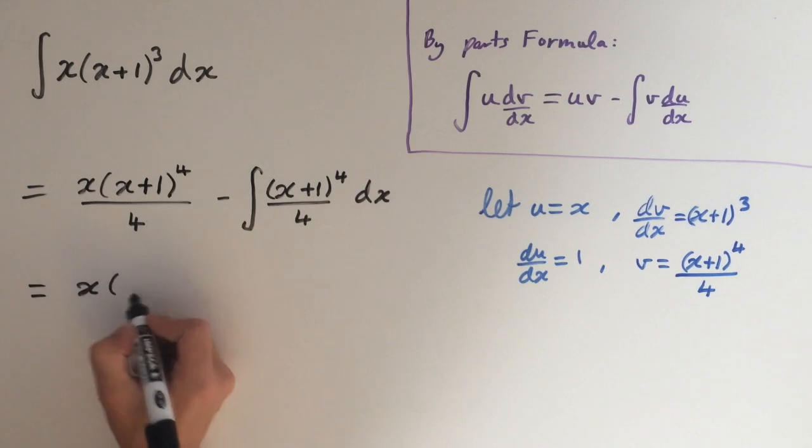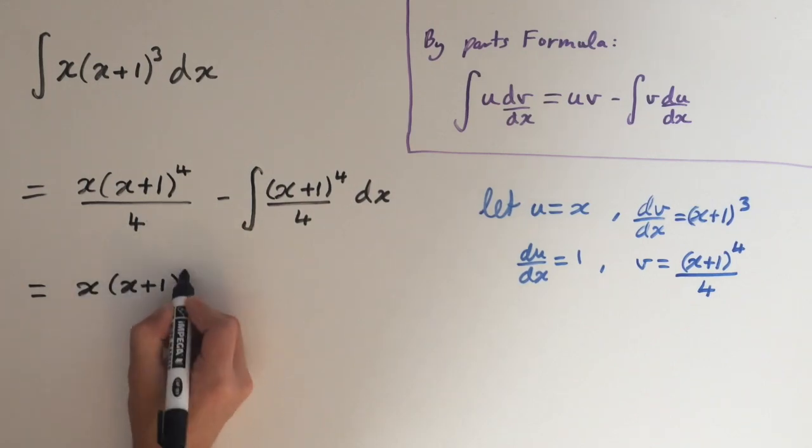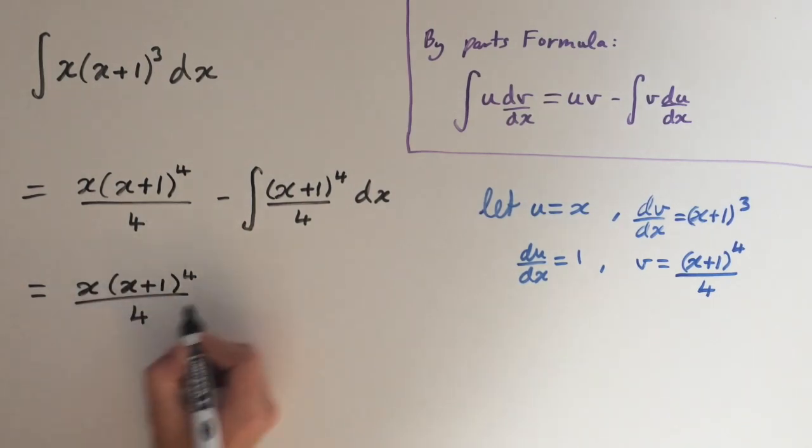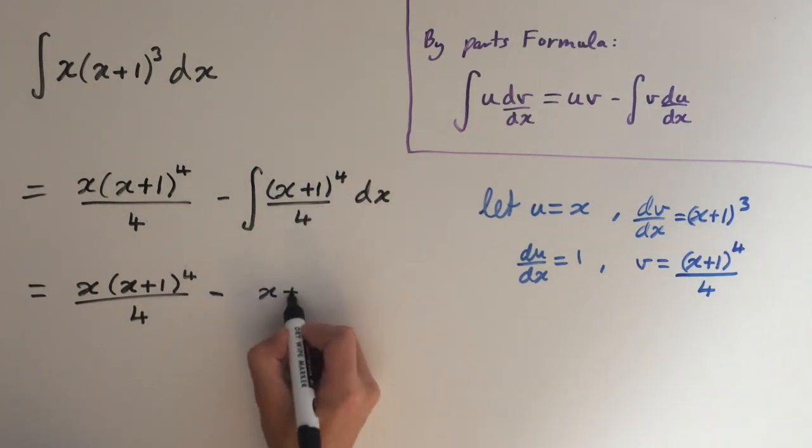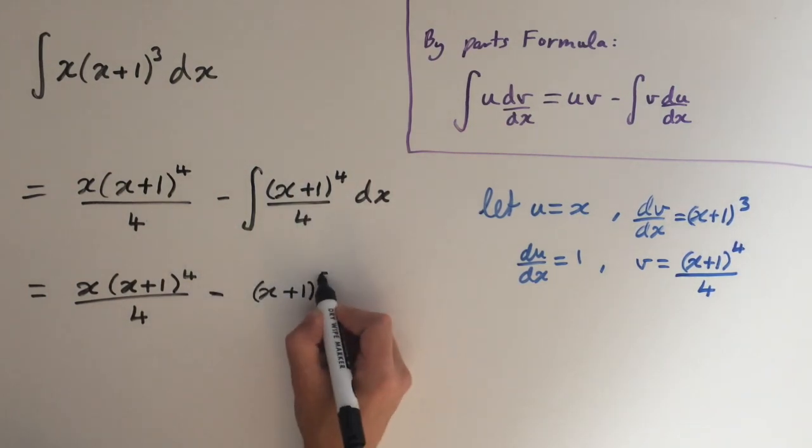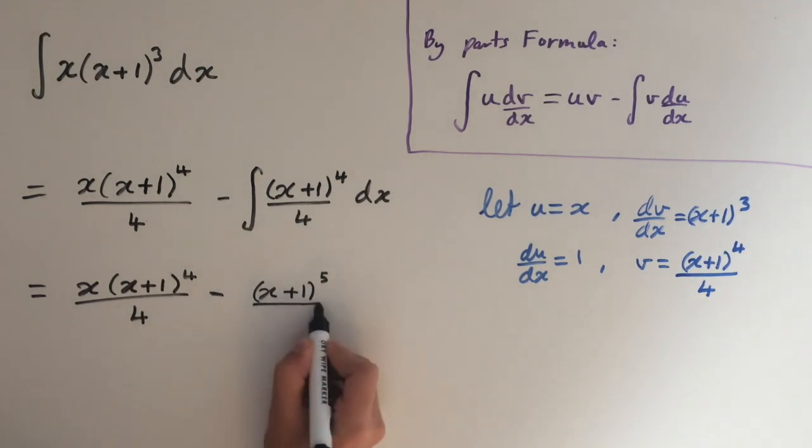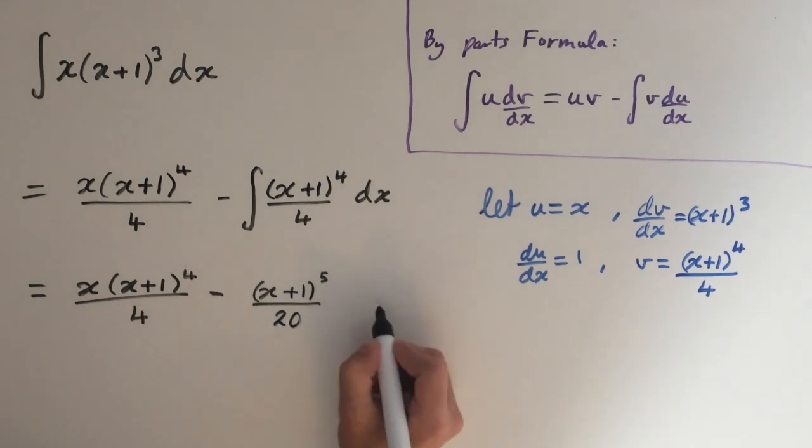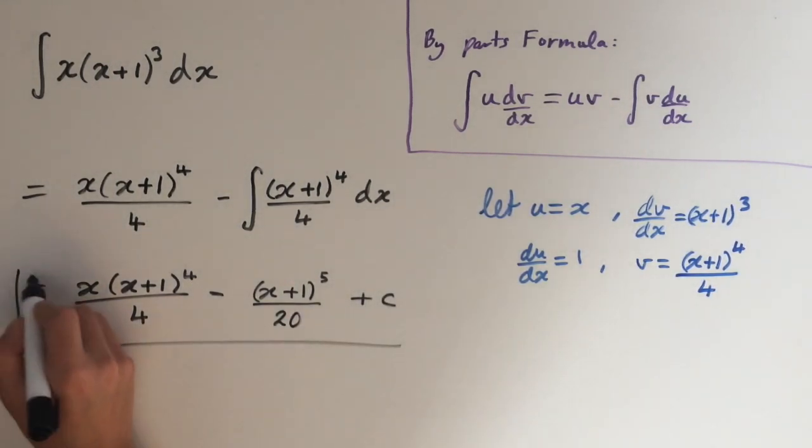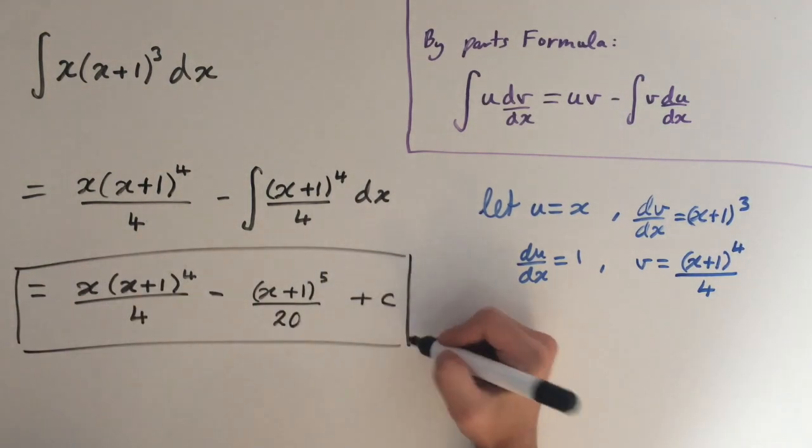So this stays the same. And now we need to integrate this. So just like before, we raise the power by 1, so it goes to 5, and then divide by the new power. So 4 times 5. So on the bottom here we get 20. Then plus c. So here we get the integral for x times x plus 1 cubed.